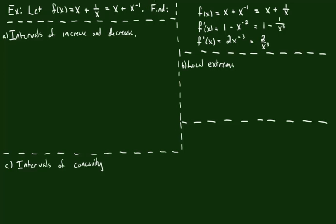What we want to do is find a few things: we want to find its intervals of increase and decrease — that means where the derivative is positive and where the derivative is negative. We want to find the local extrema, meaning the local maxes and mins. And lastly, we're going to find the intervals of concavity, meaning where the second derivative is positive for concave up, and where the second derivative is negative for concave down.